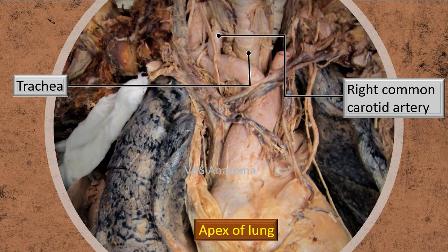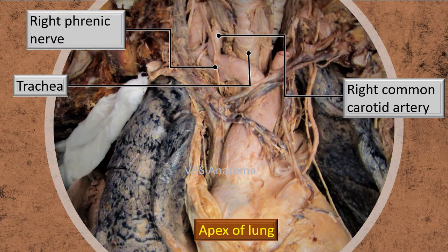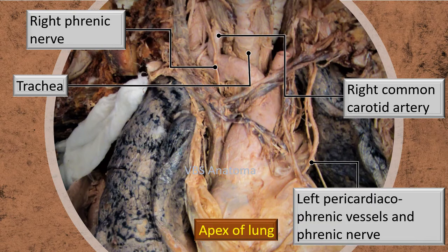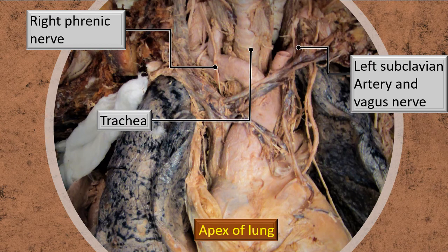The right common carotid artery — I mentioned it a little while back, I am just showing it as a label. The right phrenic nerve can be very clearly seen going down. Similarly on the left side, the left pericardiacophrenic vessels and the phrenic nerve are plastered to the pericardium — the left one on the left side, the right correspondingly on the right part of the pericardium. You can also see the trachea and the right phrenic nerve. On the left, a little behind the left common carotid, you can see the left subclavian artery, and very close to it you can see the vagus nerve.